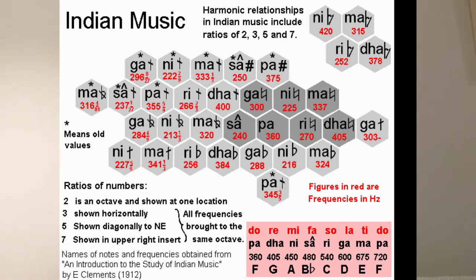The Indians called the notes sa, ri, ga, ma, pa, da, ni, sa — instead of do, re, mi, fa, so, la, ti, do. But when they modulated around, you don't always come back to the same place. This was the thing that got Pythagoras into trouble — after modulating around many keys, he ended up back where he started but missed by a little bit. It's called Pythagoras's Comma.